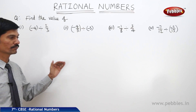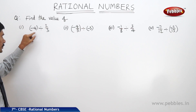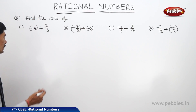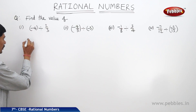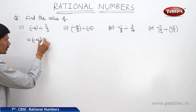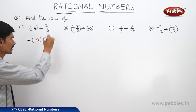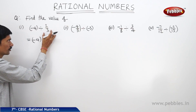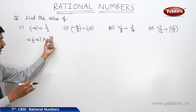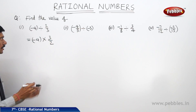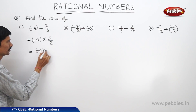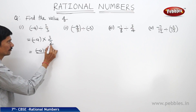Now we will divide a rational number by another rational number. Find the value of minus 4 divided by 2 by 3. While dividing, first write the first rational number as it is — minus 4 — change the division symbol to multiplication, then write the reciprocal of the second rational number. The reciprocal of 2 by 3 is 3 by 2. Since minus 4 is an integer multiplied by the fraction 3 by 2, the integer is multiplied by the numerator. This equals minus 4 into 3 divided by 2.